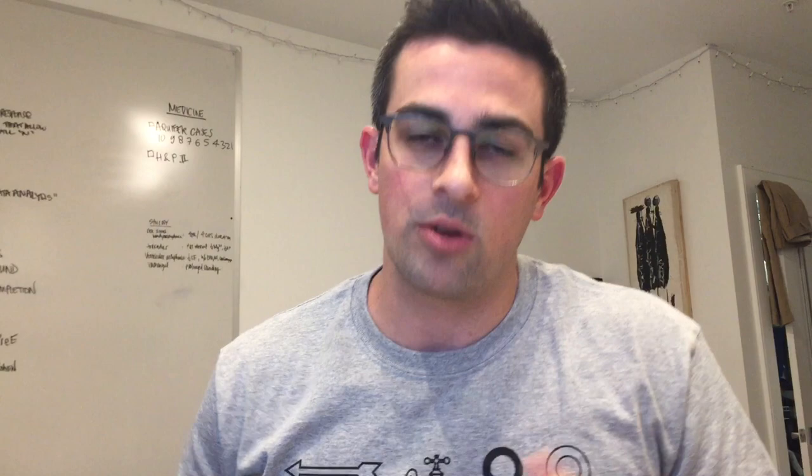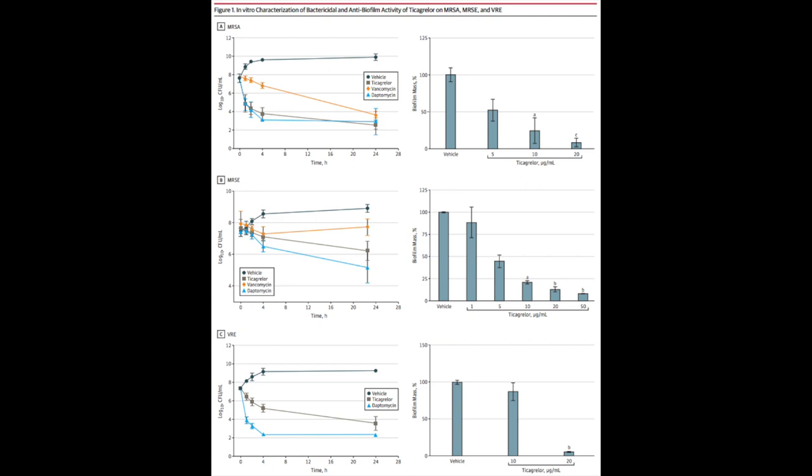This research letter has one main figure: looking at MRSA, MRSE, and VRE. We're tracking colony forming units (CFUs) from initial inoculation through exposure to each antimicrobial. What they found — which is the headline — is that ticagrelor was superior to vancomycin in reducing CFUs in these time kill curves. It was not superior to daptomycin, but that is still really interesting.